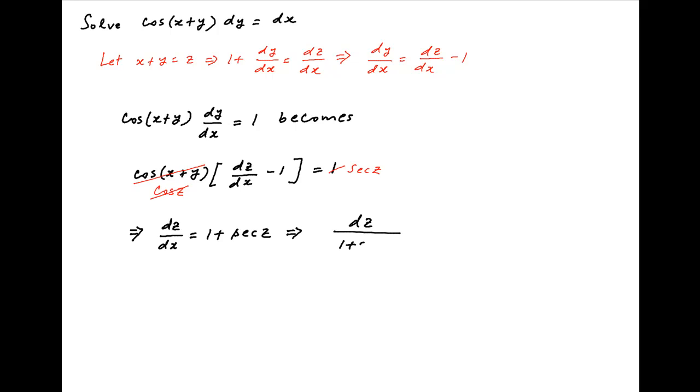Separating the variables, we get dz upon 1 plus sec z equals dx. Now, integrate both sides and add the constant of integration on the right-hand side. Therefore, the right-hand side equals x plus c.